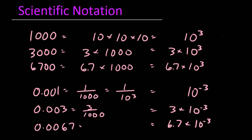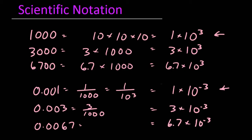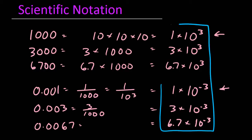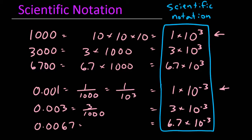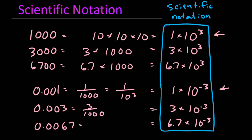Now another way of writing 1,000 would be as 1 times 10 to the third power, and another way of writing 0.001 would be as 1 times 10 to the negative third power. All of the numbers in the last column are written in proper scientific notation. Numbers written in proper scientific notation have two characteristics. We have a number in front of the multiplication sign that is always a number between 1 and 10.